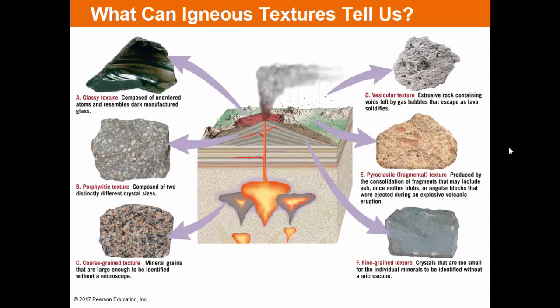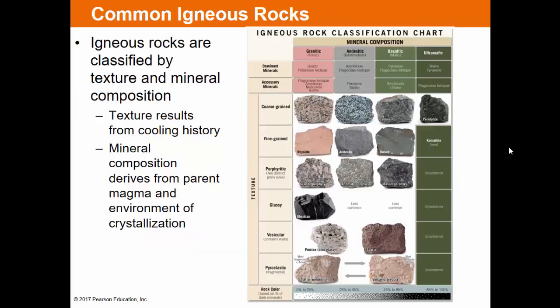Glassy texture has unordered atoms — volcanic glass with conchoidal fracture — where magma cooled so quickly atoms couldn't arrange into crystals. Porphyritic texture has two distinct crystal sizes: a gray groundmass of very small crystals that probably formed closer to the surface, and larger phenocrysts that probably formed deeper. Coarse grain texture has mineral grains large enough to identify without a microscope — your classic granite formed deep underground. Very fine grain texture has crystals too small to identify individual minerals without a microscope.